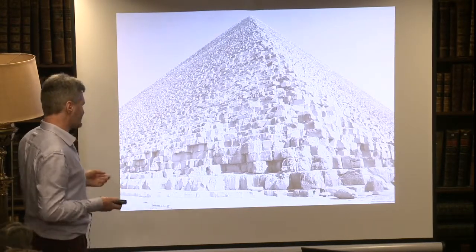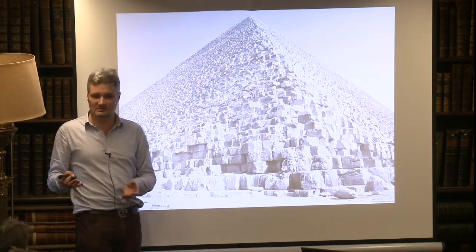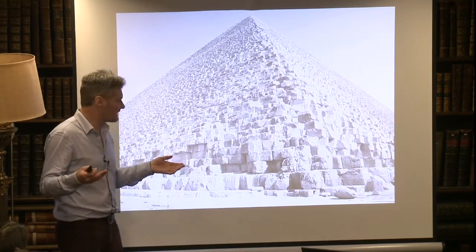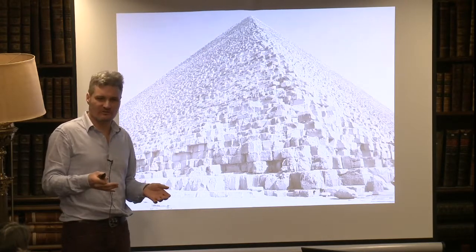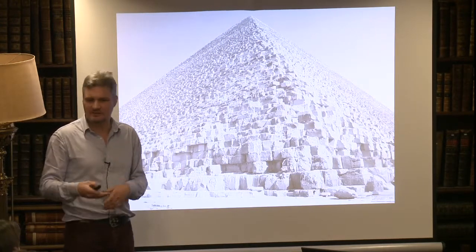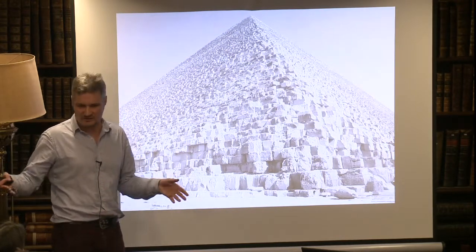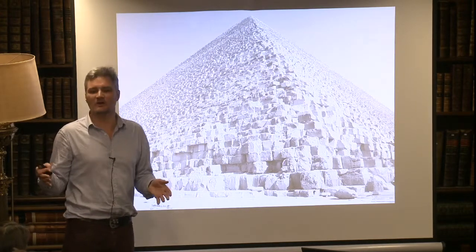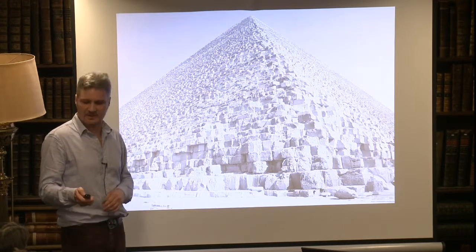Here we are in the old kingdom. This is the Great Pyramid. And just to emphasize the antiquity of this civilization, the Great Pyramid was the tallest man-made structure on earth for 46 centuries. When one thinks of the Chrysler Building and the Empire State Building being the tallest buildings in the world for 20 or 30 years, the Great Pyramid was the tallest building on earth for 4,600 years, dating to around the middle third millennium BC at the height of the old kingdom.